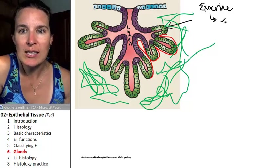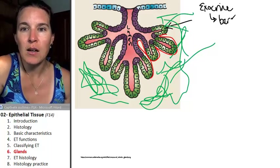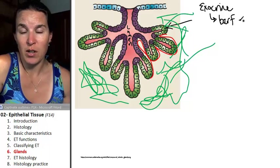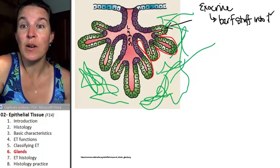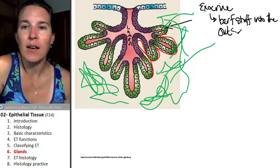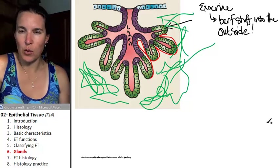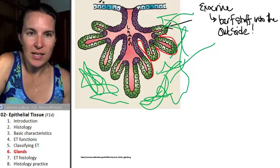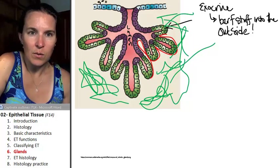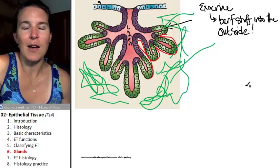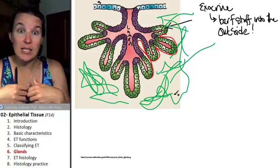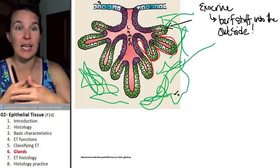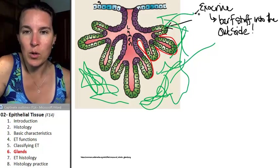But exocrine glands barf substance into the outside, the outside of your body. So if this is your skin, I can't write that tiny on top of that thing. But if that was your skin and this was a gland that was barfing stuff onto the surface of your skin, outside your body, it would be an exocrine gland.